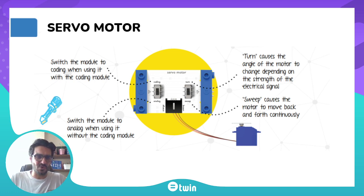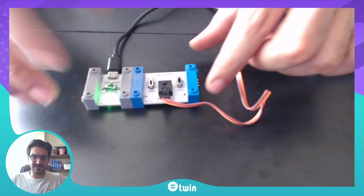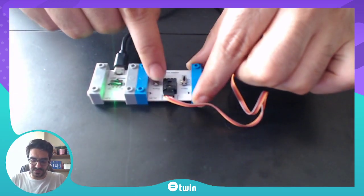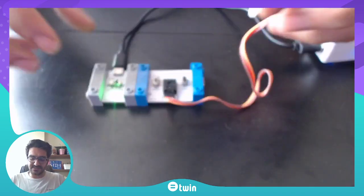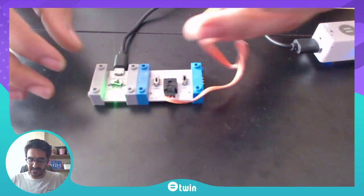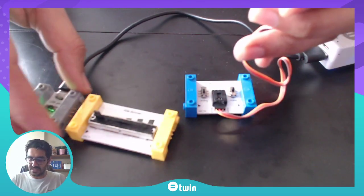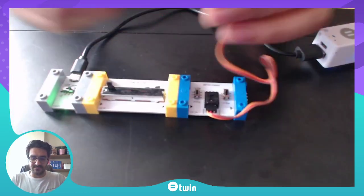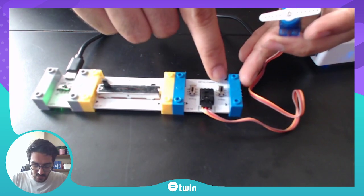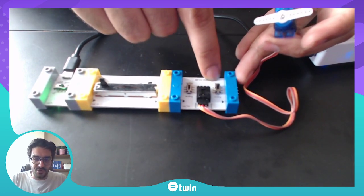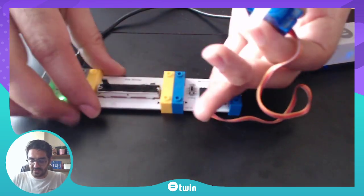So before making it more complicated, let's figure out together. Since I'm not using a coding module, I choose the switch to analog — I make sure it is in analog. If you want to use a servo motor, it is best to use it with an input. It is in analog mode and we are now exploring the turn mode. Let's see what will happen.